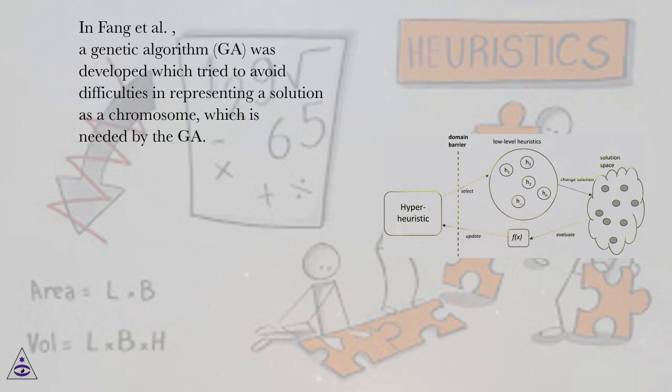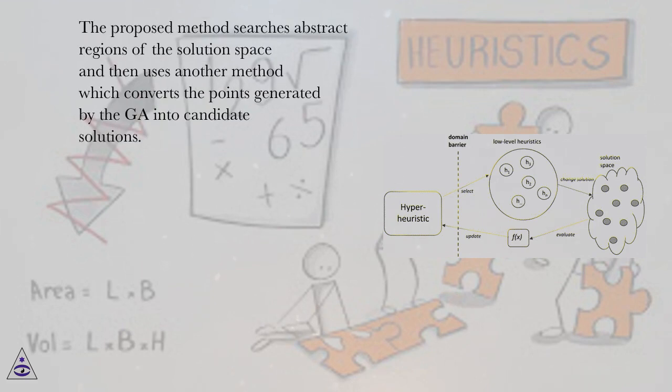In Fang et al., a genetic algorithm (GA) was developed which tried to avoid difficulties in representing the solution as a chromosome, which is needed by the GA. The proposed method searches abstract regions of the solution space and then uses another method which converts the points generated by the GA into candidate solutions.